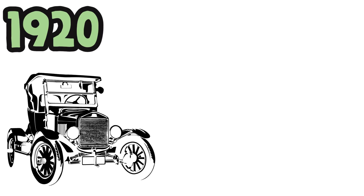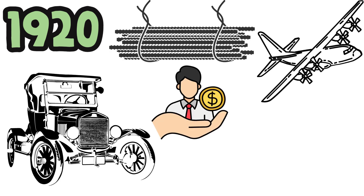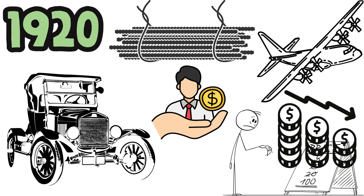The 1920s saw a boom in industrial production, leading to overproduction of goods. However, wages did not rise at the same pace, resulting in a disparity where consumers couldn't afford the excess products. This imbalance between production and consumption set the stage for an economic downturn.